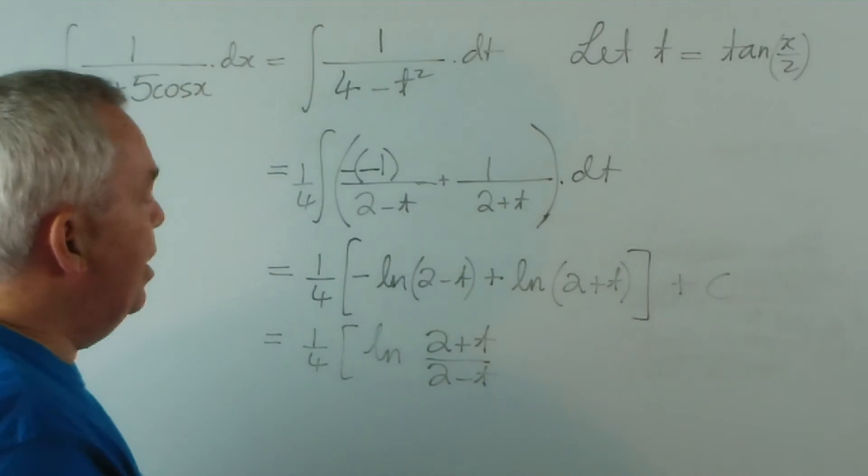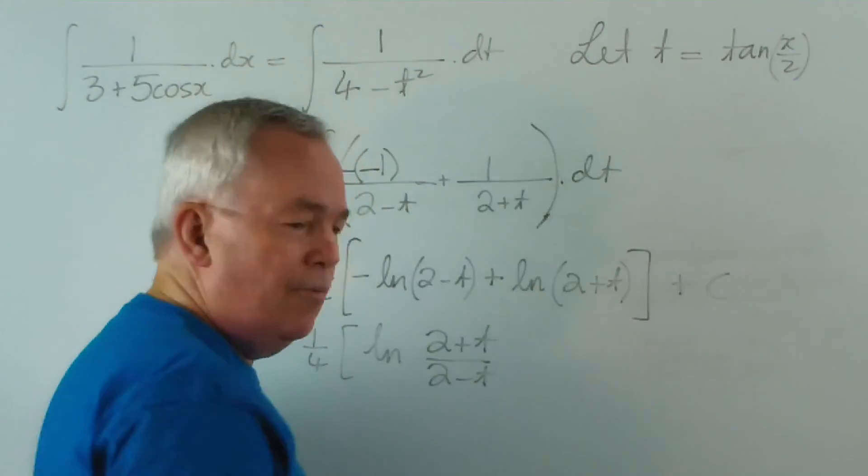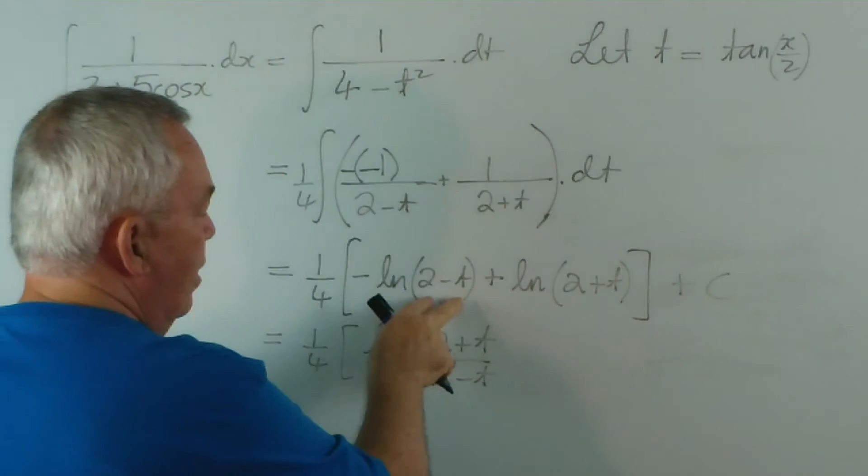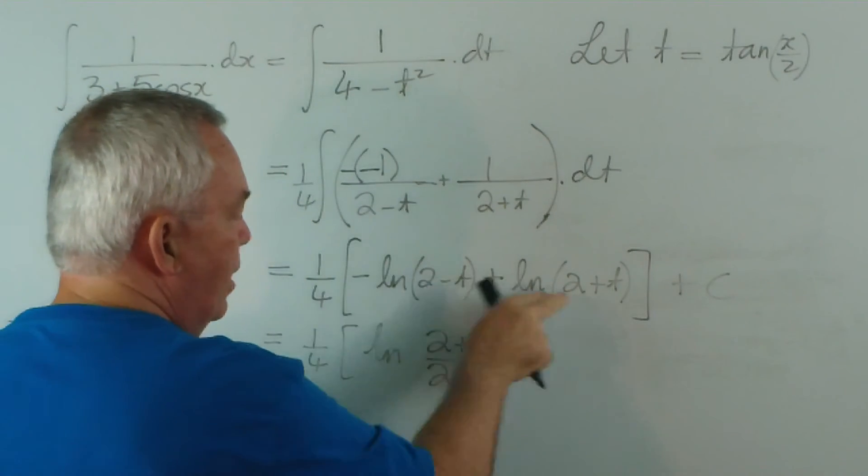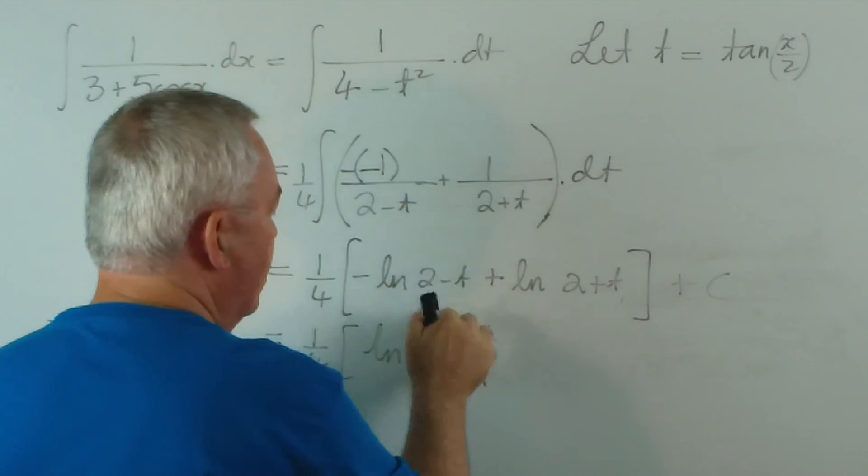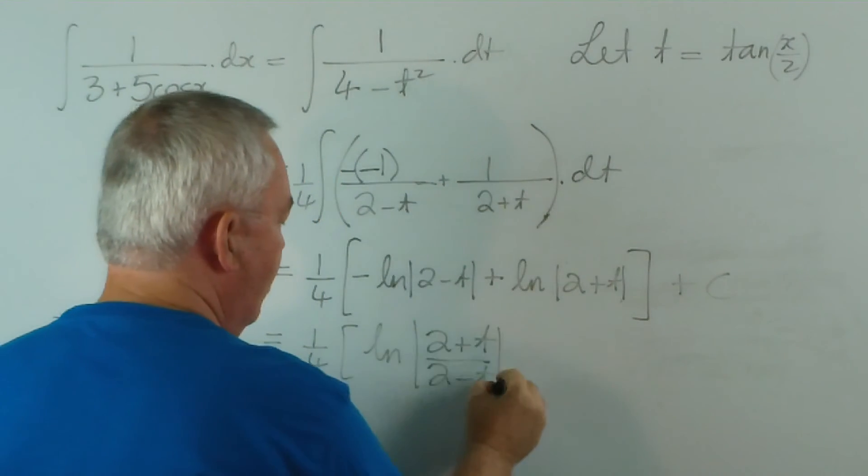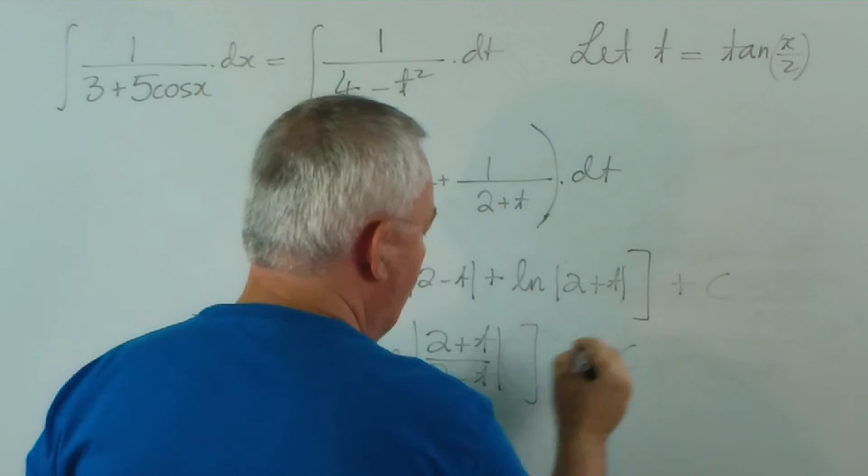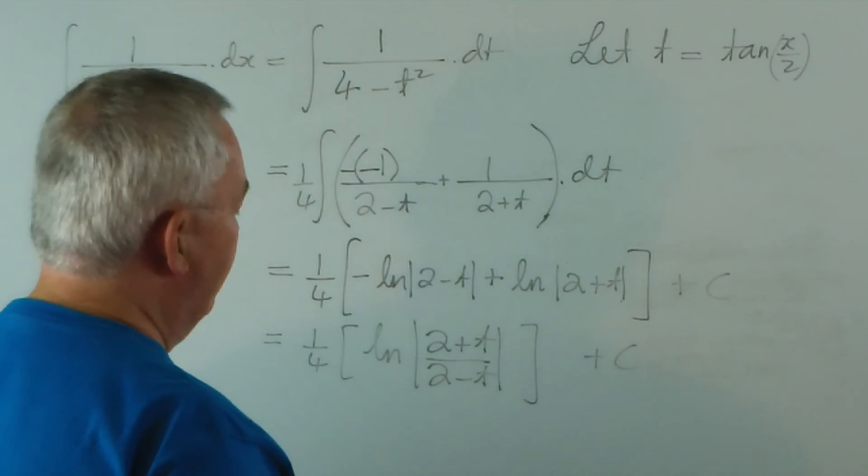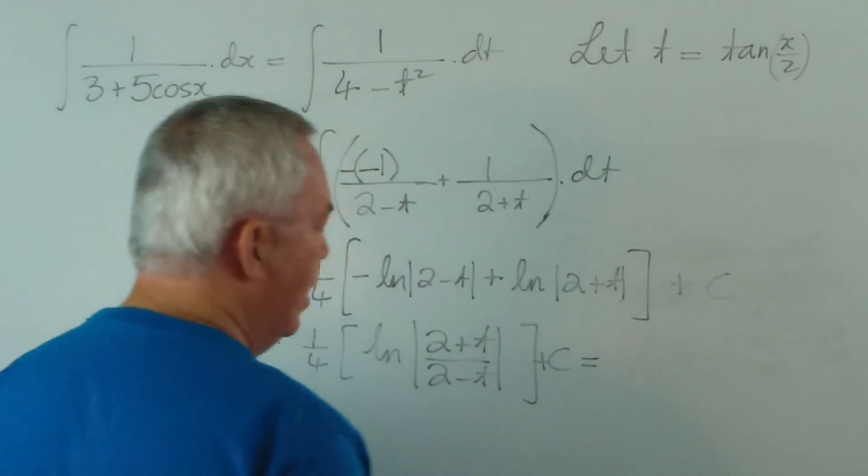Now, strictly speaking, tangents can take a variety of values from minus infinity to plus infinity. Therefore, these could take negative values. So strictly speaking, we should have used absolute value signs. And, I'm running out of room again, so I'm going to squeeze this in over here.